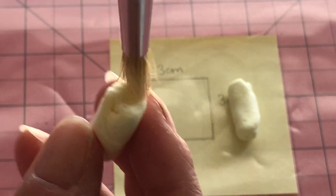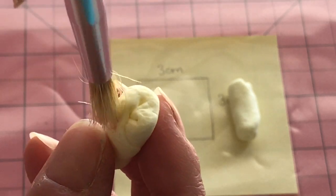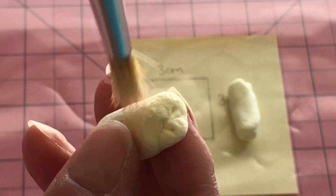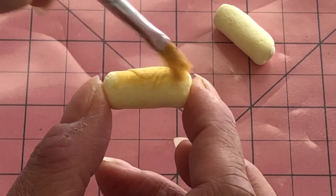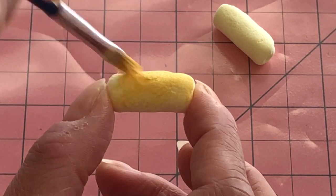Again, texture all over using a hard bristled paint brush. To shade the roll, use a small amount of watered down golden brown paint.